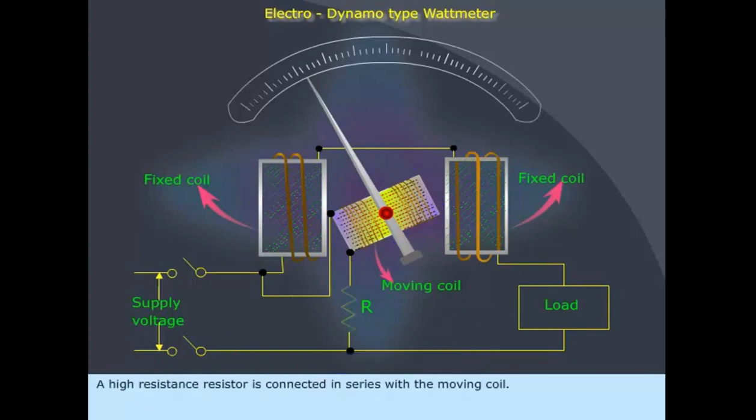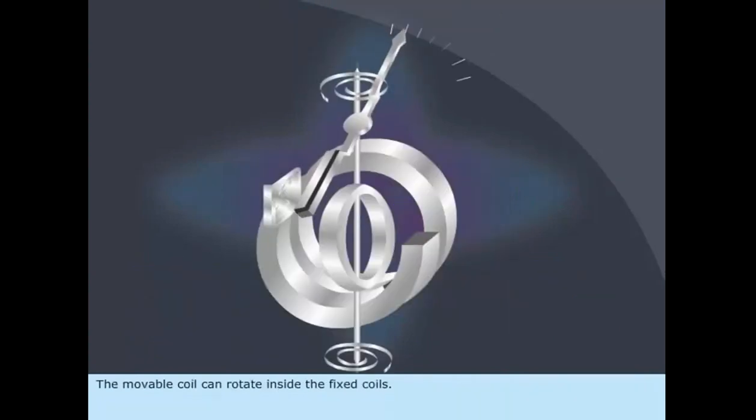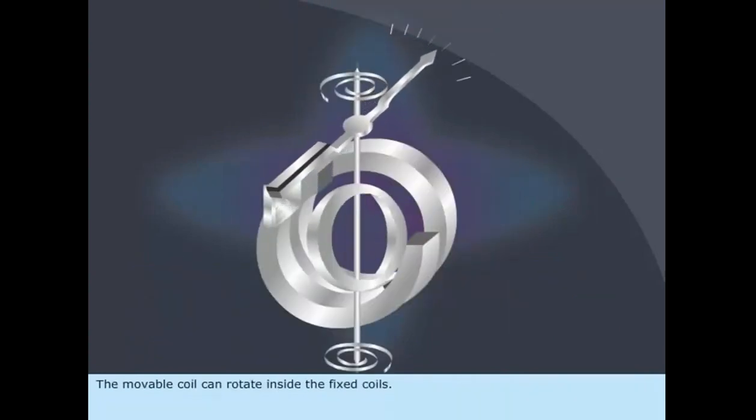A high resistance resistor is connected in series with the moving coil. The purpose of this resistor is to limit the current in the moving coil. This coil is mounted on the shaft. This shaft is carried by jewel bearings. The movable coil can rotate inside the fixed coils.